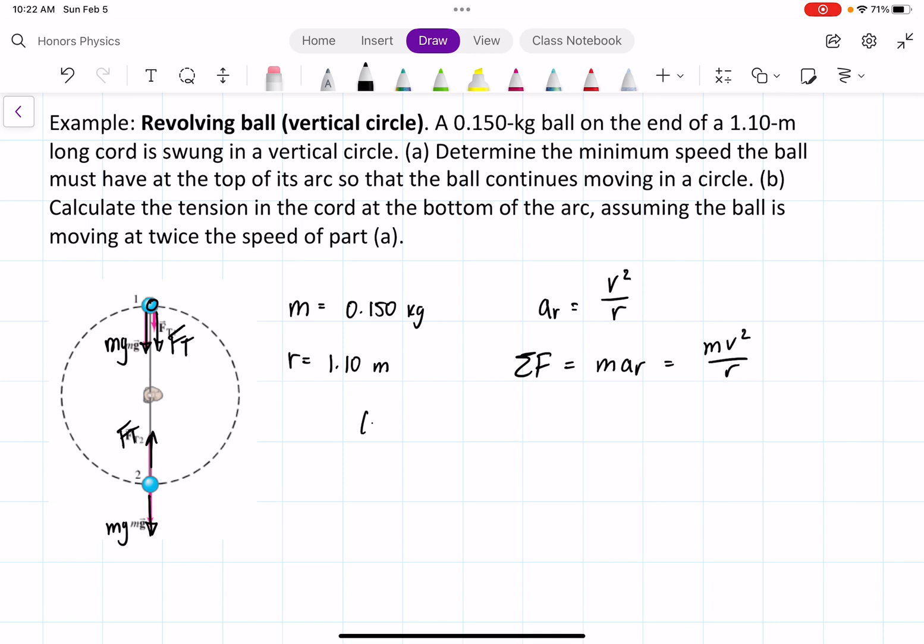And if we look at case one, we know that the only forces acting towards the center are going to be gravity and the force of tension. So we have force of tension plus MG is equal to MV squared over R.